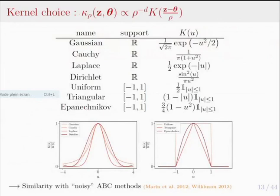Now we must choose the smoothing kernel. There are many ways to do so. In this presentation I focus on the Gaussian smoothing kernel in order to obtain theoretical guarantees both on the bias of the approach and on the mixing times associated with MCMC algorithms based on this approximate statistical framework.